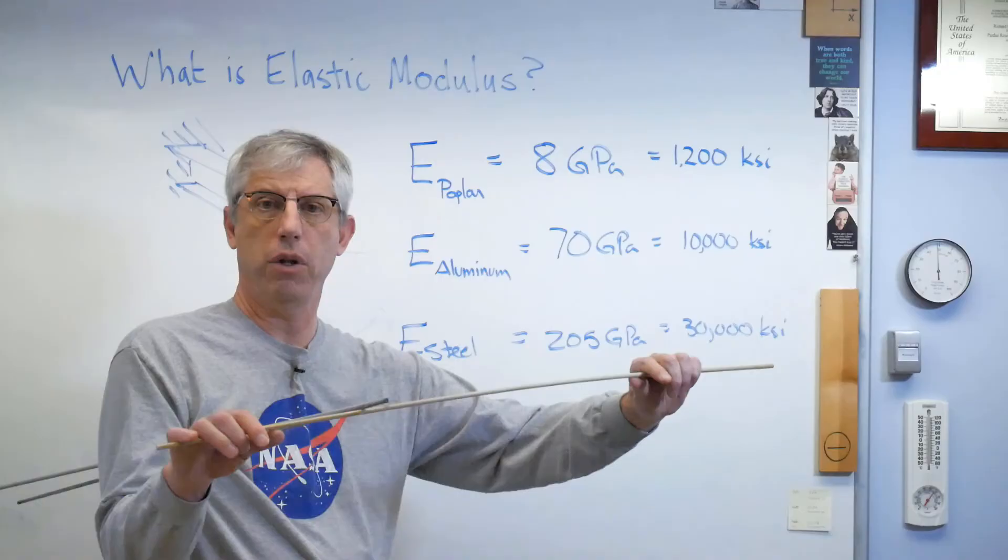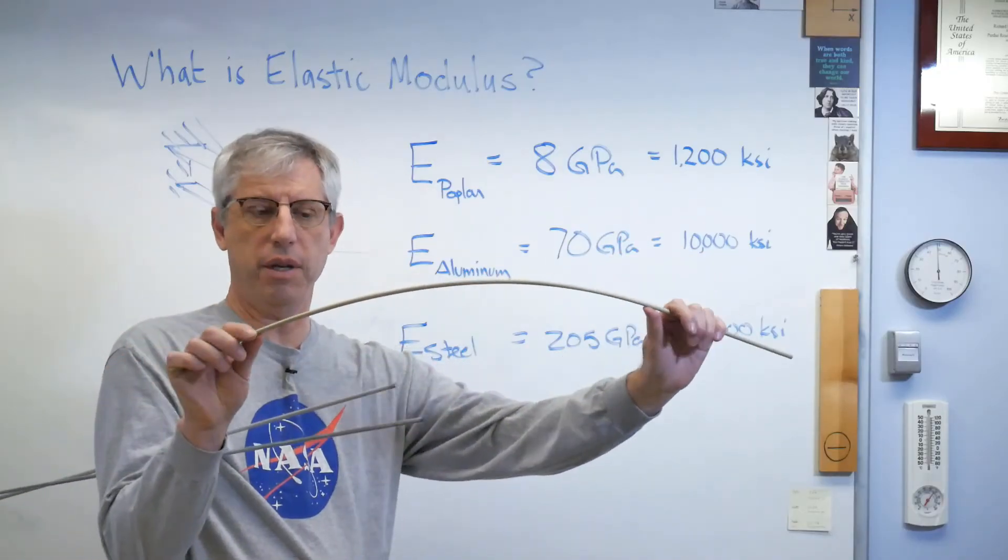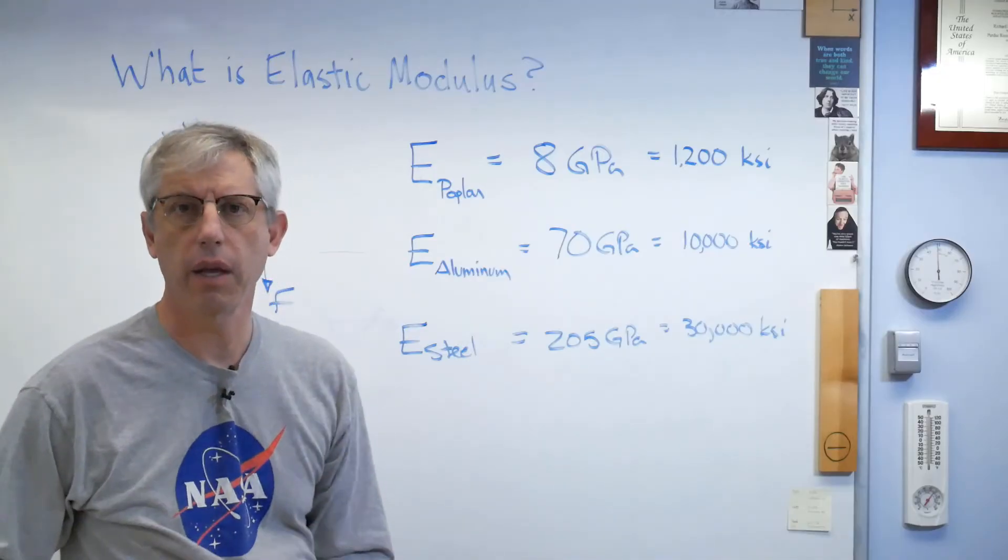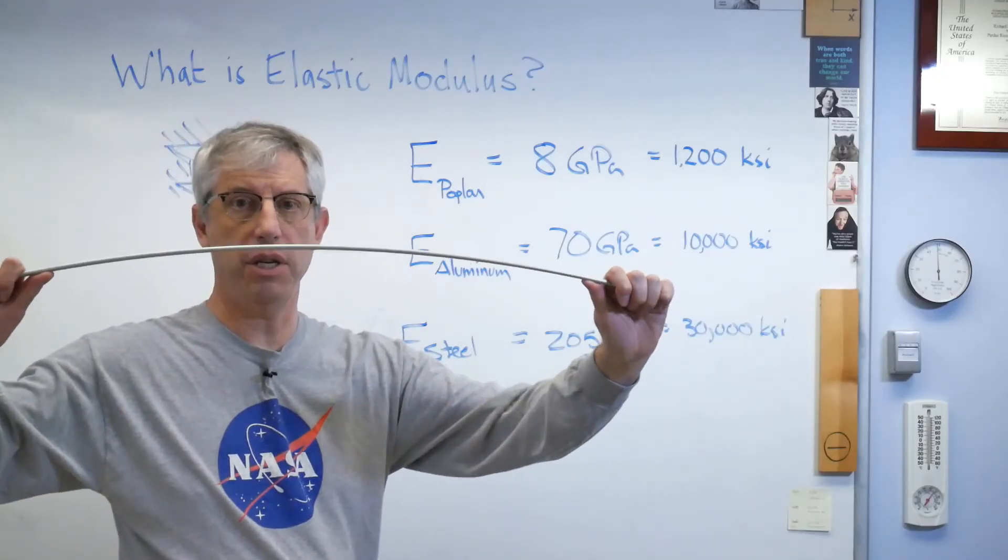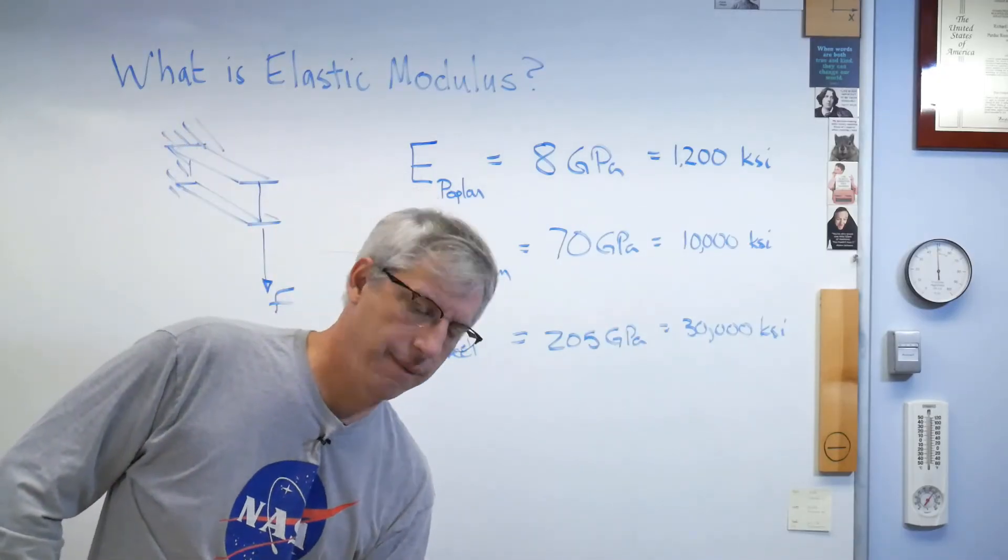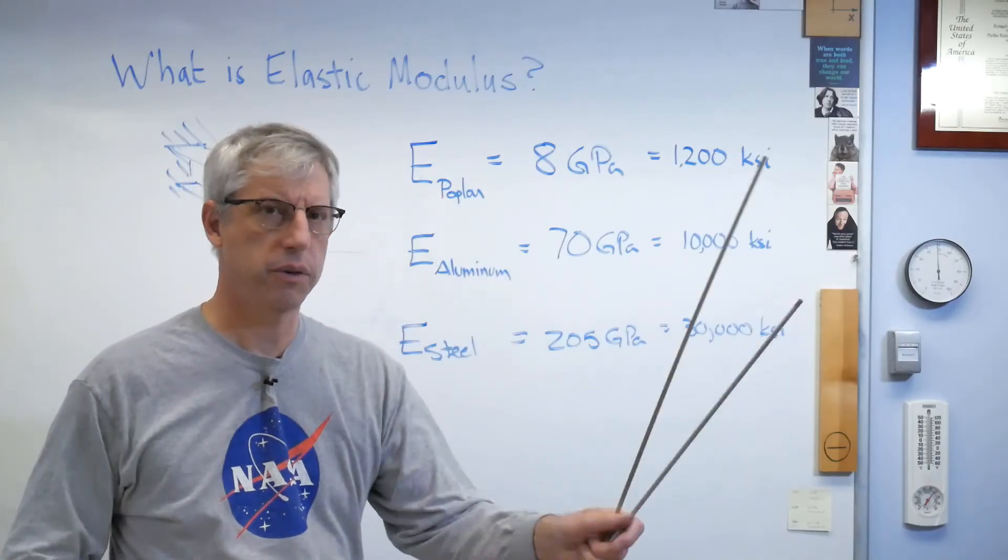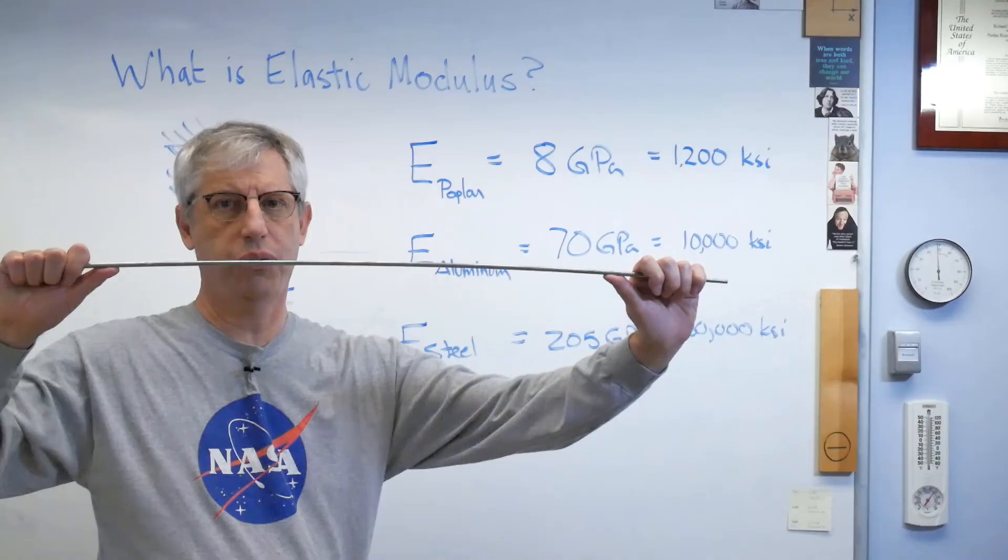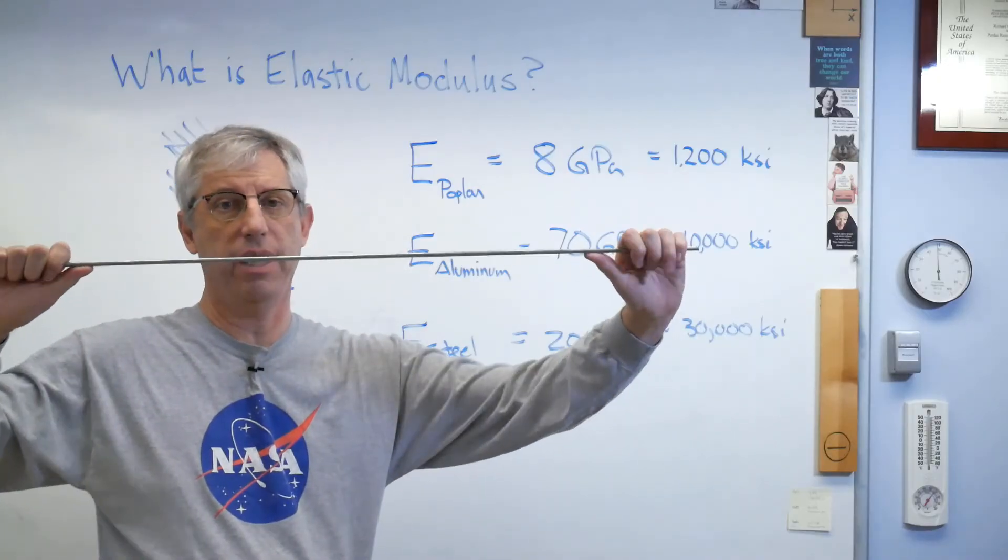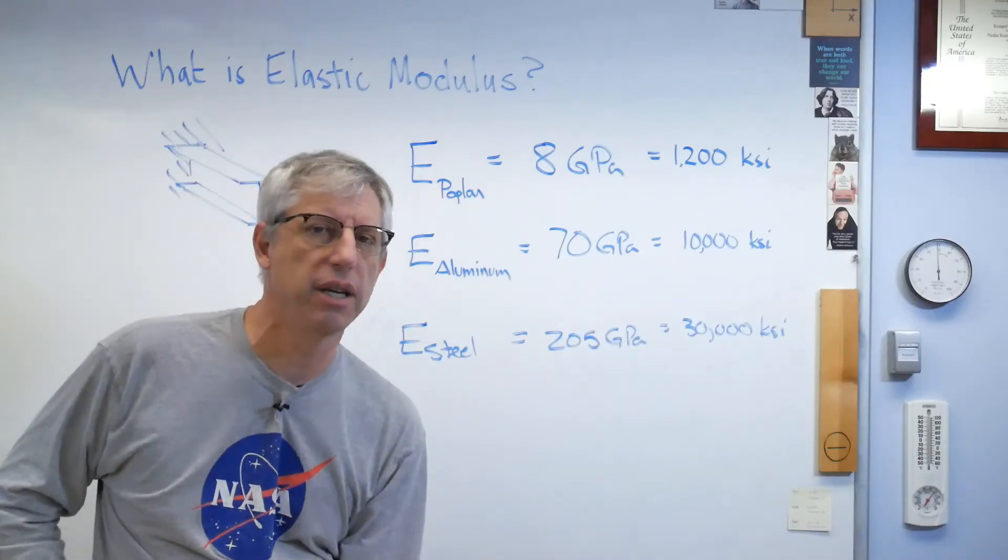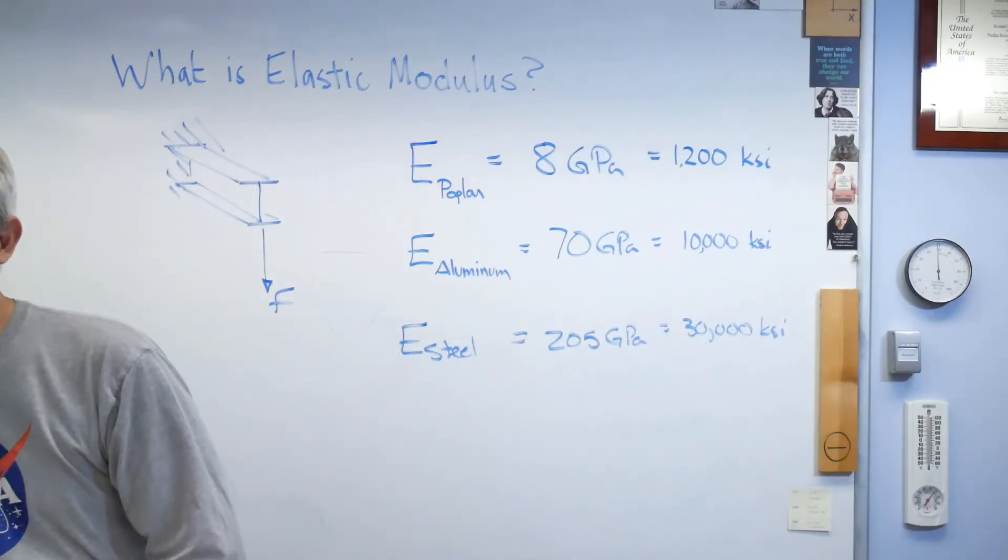Aluminum wood, real easy to bend. Aluminum, much easier to bend. And steel. Pretty dang hard to bend. With my hands there, I can just barely put a bend in it. It's hurting my fingers. So, I'm going to stop. But that's elastic modulus.